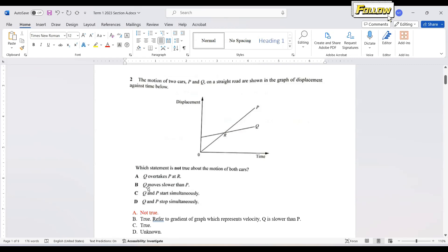Q moves slower than P, so either moves slower or faster, we can check the gradient of the graph. Q has lower value of gradient, so it is indeed that Q moves slower than P. Q and P start simultaneously. Yes, because at time zero, both the cars start moving. And for answer D, Q and P stop simultaneously. For this answer, actually I think it is unknown because both P and Q are actually still moving after this time. But we do not know about the motion of the car.